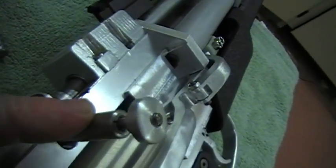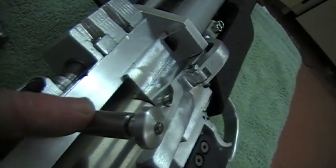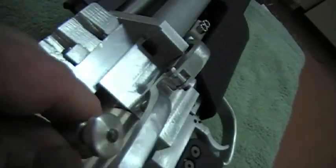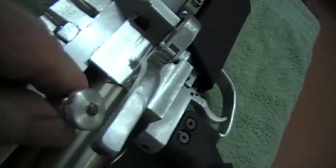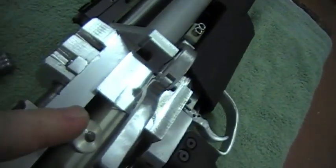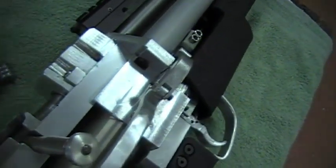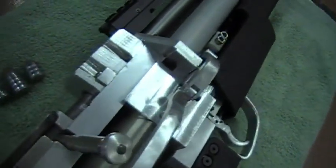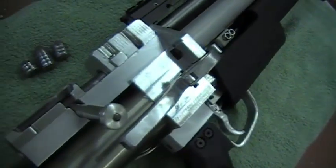And that way you know you've got it locked. It's not going to go anywhere. You got a visual lock plus it's positively locked. This thing cannot pop out. Now I'm gonna go ahead and remove this cross bolt.